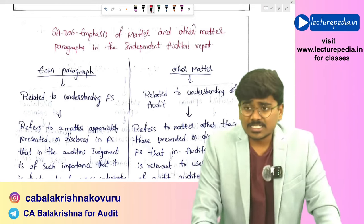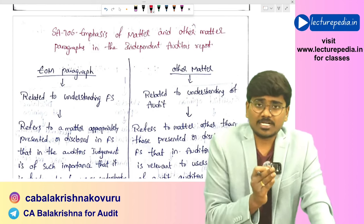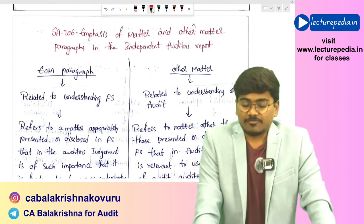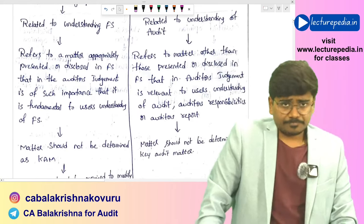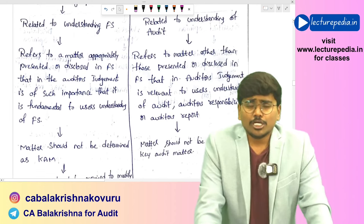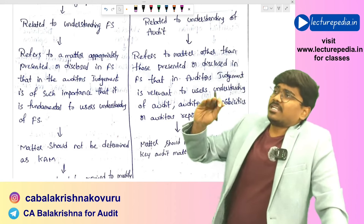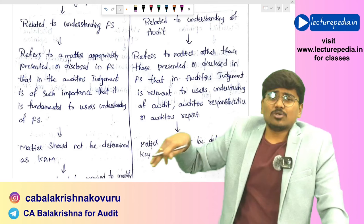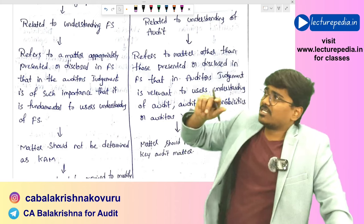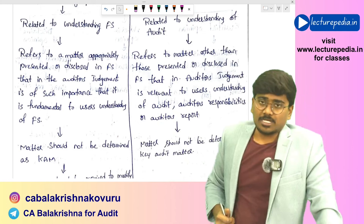SA 706 is quite simple — emphasis of matter paragraph relates to understanding of the financial statements, while other matter paragraph relates to understanding of the audit. An important point: if any matter has been determined as a key audit matter, you need not repeat it in the emphasis of matter or other matter paragraph. Also, if a particular matter requires modification of the opinion, you must modify the opinion — you cannot avoid this by including the matter in the emphasis of matter paragraph instead.